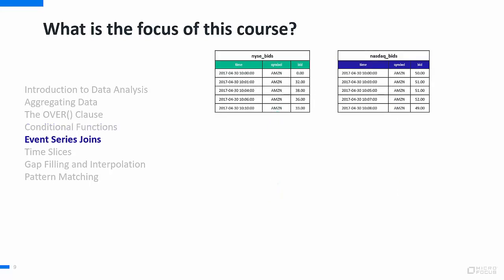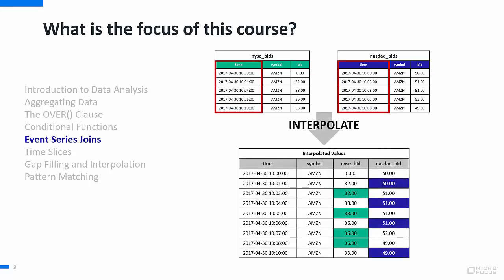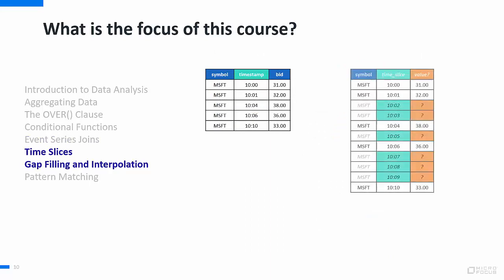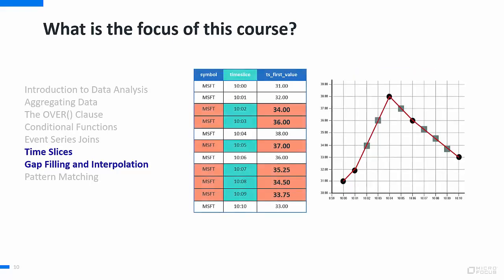The event series join functionality uses the interpolate keyword to normalize data with missing associated timestamps. The output shows the interpolated values of each entry for the missing timestamps in each table. One of the biggest problems in analyzing data is normalizing information where there are gaps in your data. Vertica provides SQL extensions that identify those gaps and interpolate the missing values for each data point.